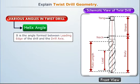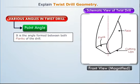Helix angle is the angle formed between the leading edge of the drill and the drill axis. Point angle is the angle formed between both flanks of the drill.